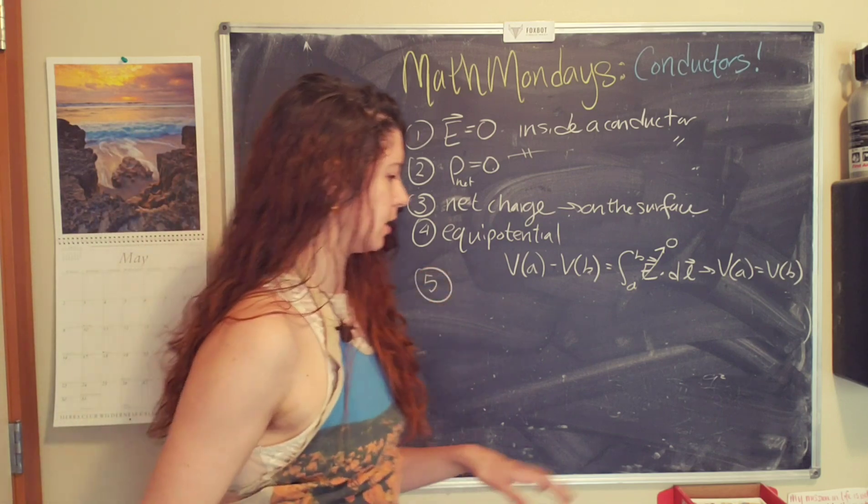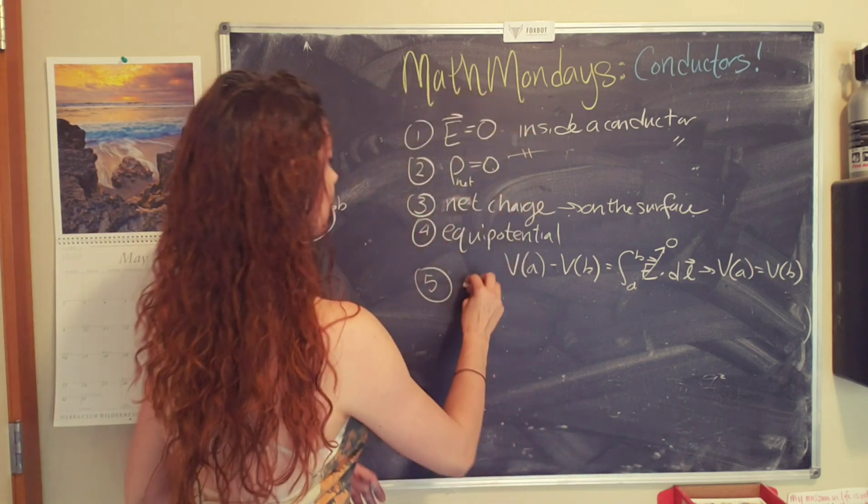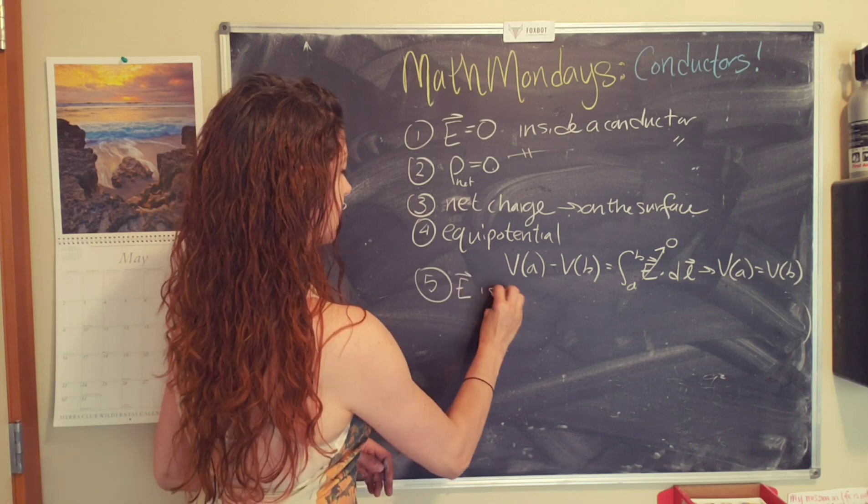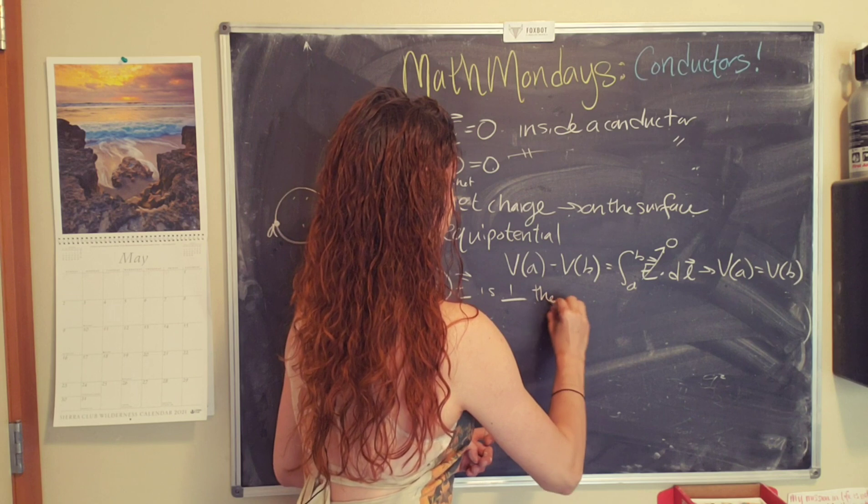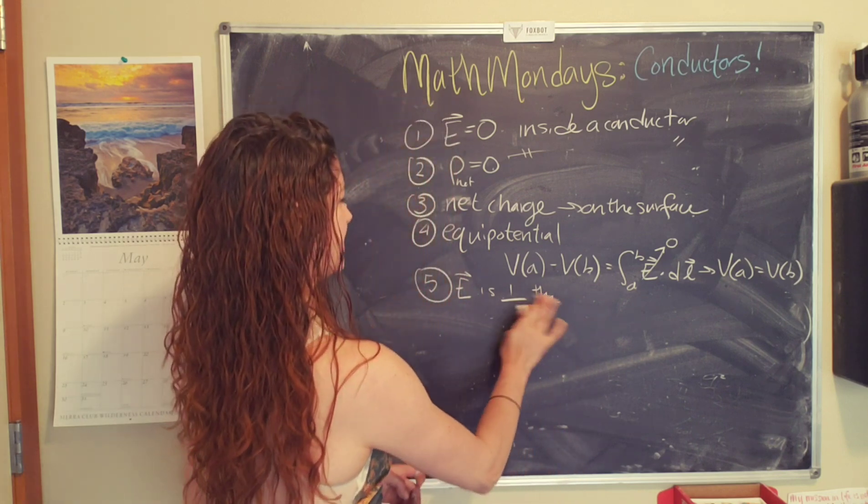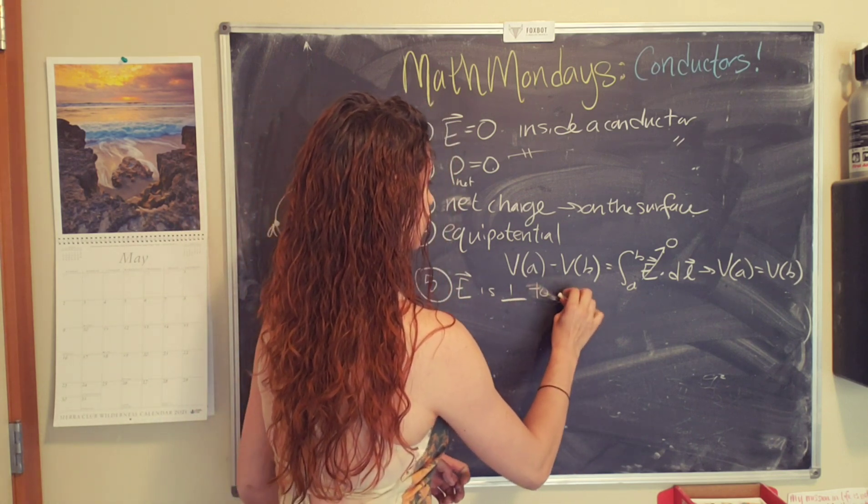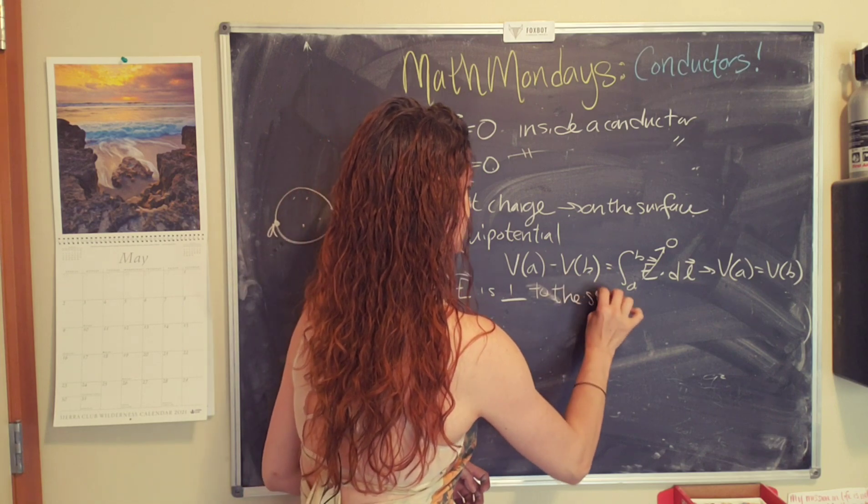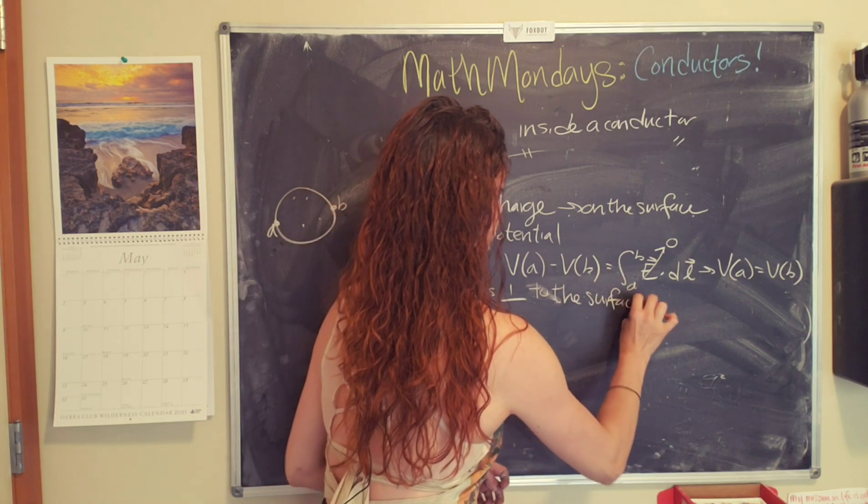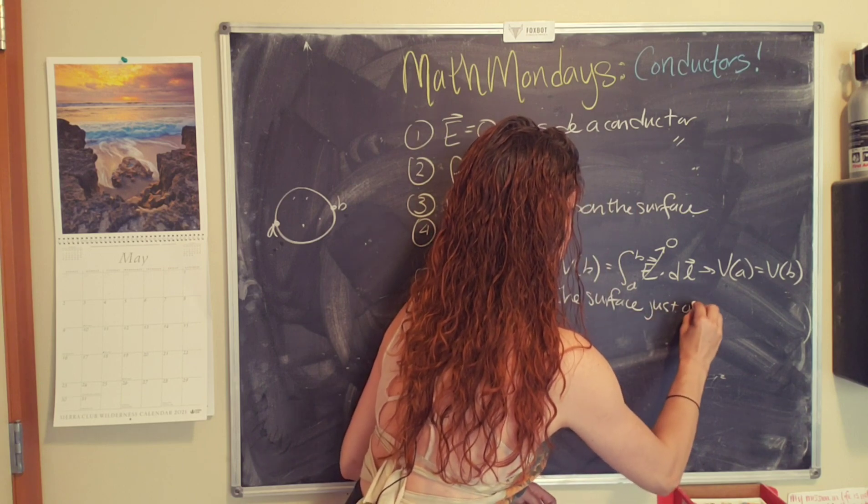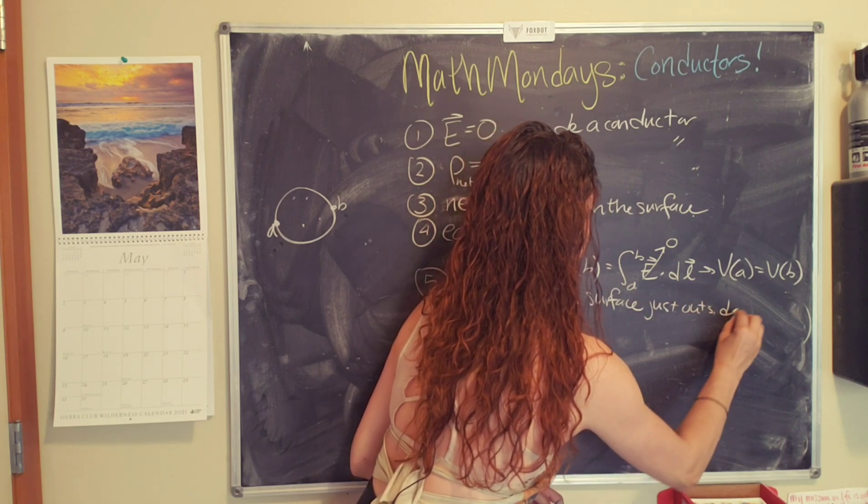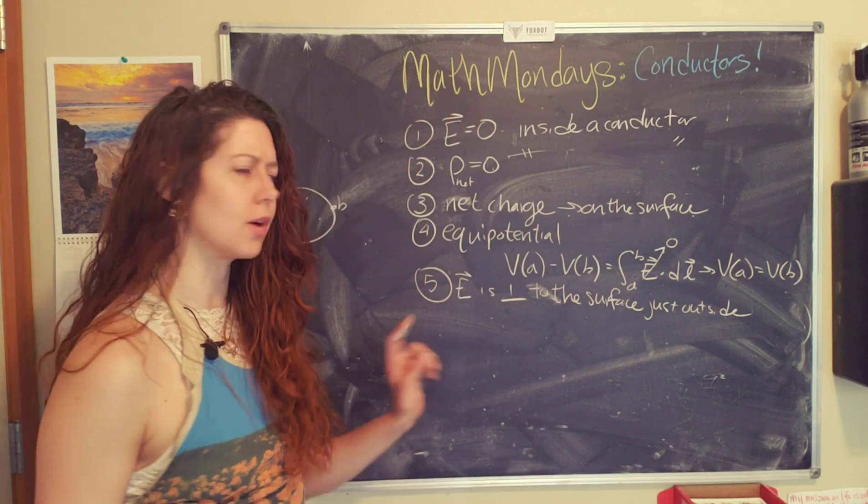And last but not least, the electric field is perpendicular to the surface on the outside. I'll say just outside. This is also super funky. Let's look at a fun shape. Woo. Okay.